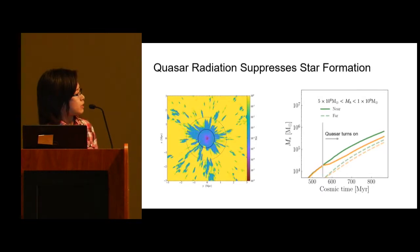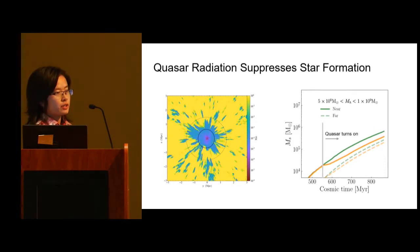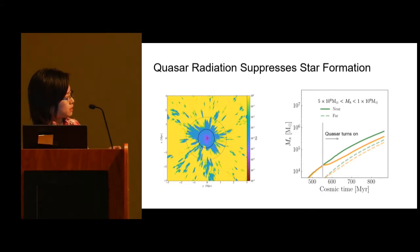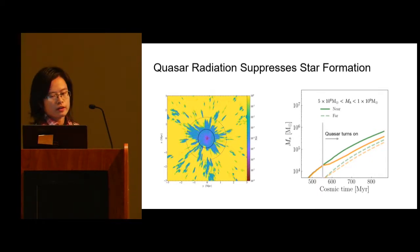We want to understand how quasars may impact this star formation history. I plot the same thing but for the simulation with a quasar. At the vertical line where I turn the quasar on, suddenly the star formation gets suppressed right away. The physical mechanism is photo-dissociation of molecular hydrogen. For halos outside the dashed line, the degree of suppression is very small because the radiation field is less intense.